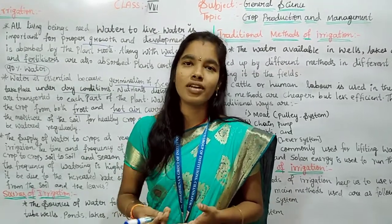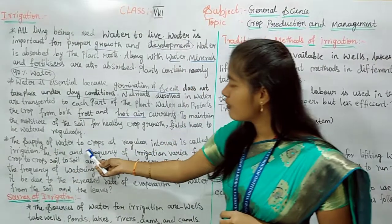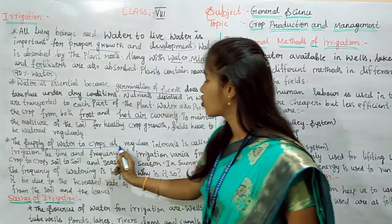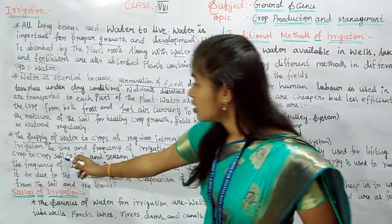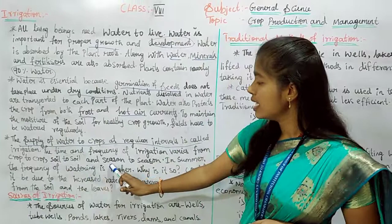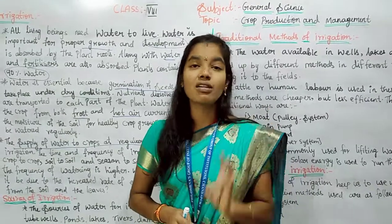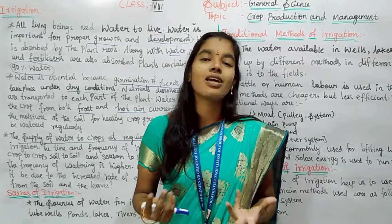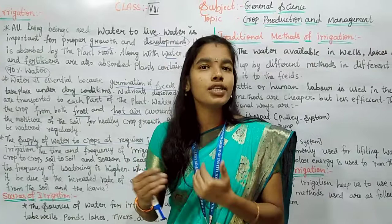The supply of water to crops at regular intervals is called irrigation. The time and frequency of irrigation varies from crop to crop, soil to soil, and season to season. Some crops require a lot of water, like rice, while others require less.